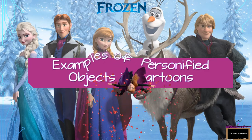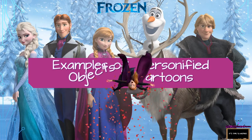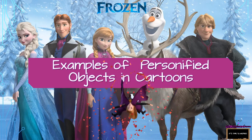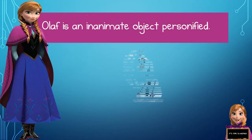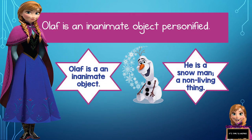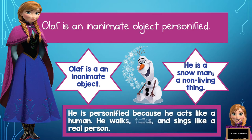We're going to look at different examples of personified objects in various cartoons. Did you know that Olaf is considered an inanimate object? He is an inanimate object that has been personified. Personification is when we give inanimate objects and animals human-like traits and qualities. Olaf is definitely an inanimate object because he is a snowman — a non-living thing. However, he acts like a person. He is personified because he acts like you and I. He walks, he talks, he sings like a real person, and he tells jokes.